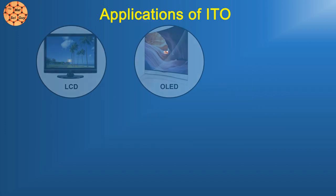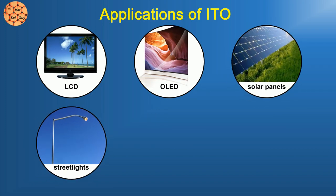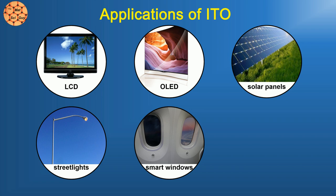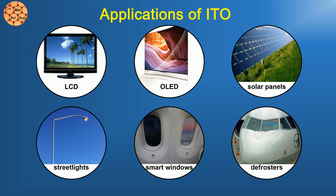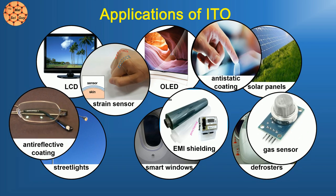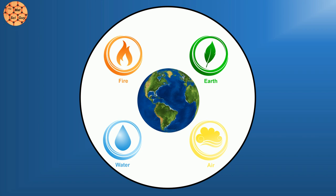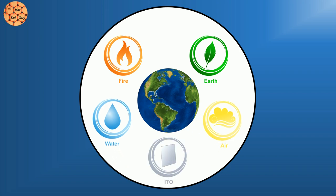ITO is also used in solar panels, sodium vapor lamps, electrochromic windows, and many many other applications. ITO is truly a staple of the modern world. It could very well be the most important material you've never heard of.